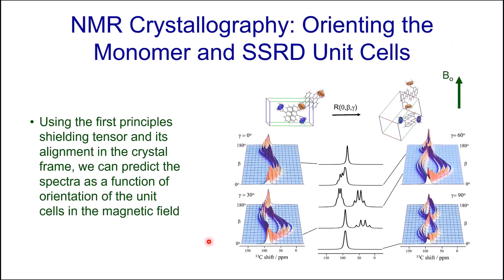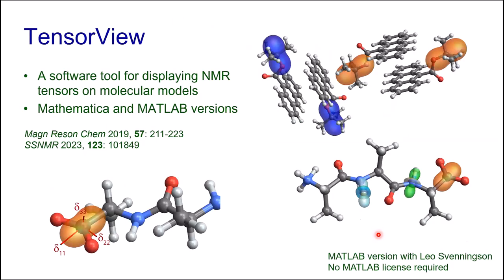To orient the unit cells, we make use of chemical shielding tensors and their alignment relative to the crystal unit cell calculated using first principles. We can predict what spectra would look like as a function of unit cell orientation parameterized by rotations about the beta and gamma Euler angles. Before proceeding, a shameless plug for our software TensorView, which makes it easy to display tensors on the molecular framework. For those who still think of tensors as ellipsoids: these are what they actually look like — the shape is far more interesting. TensorView runs in Mathematica and there's a MATLAB version available without a license, also on NMRbox.